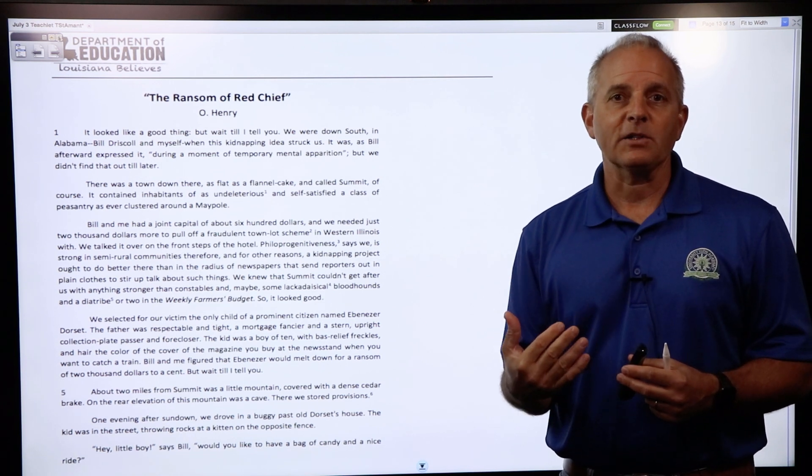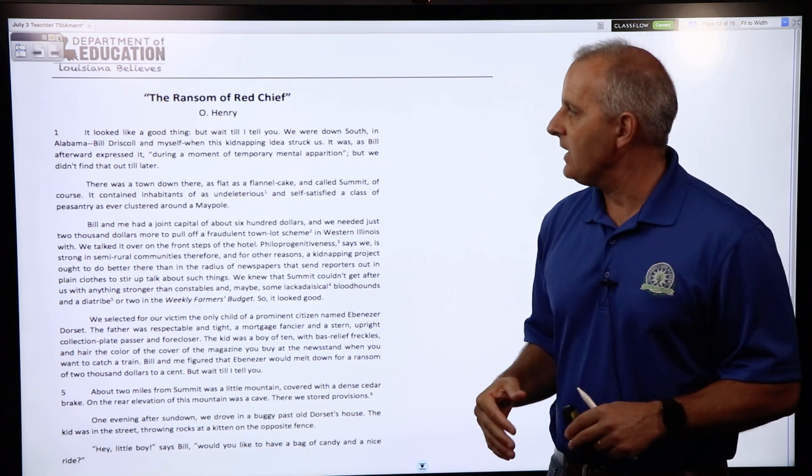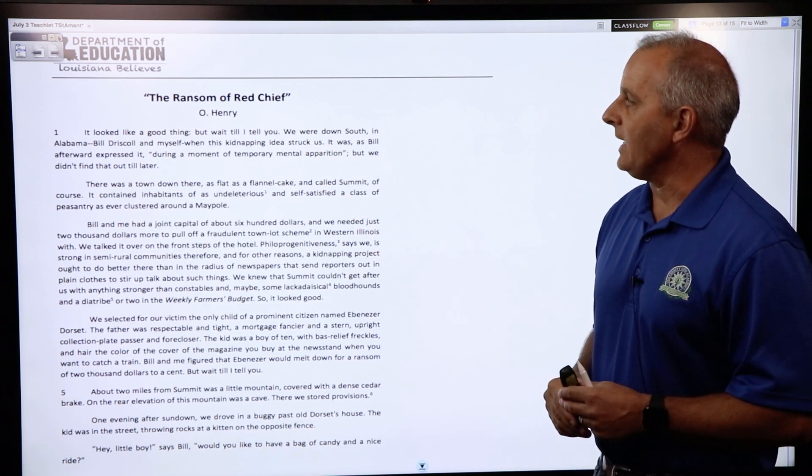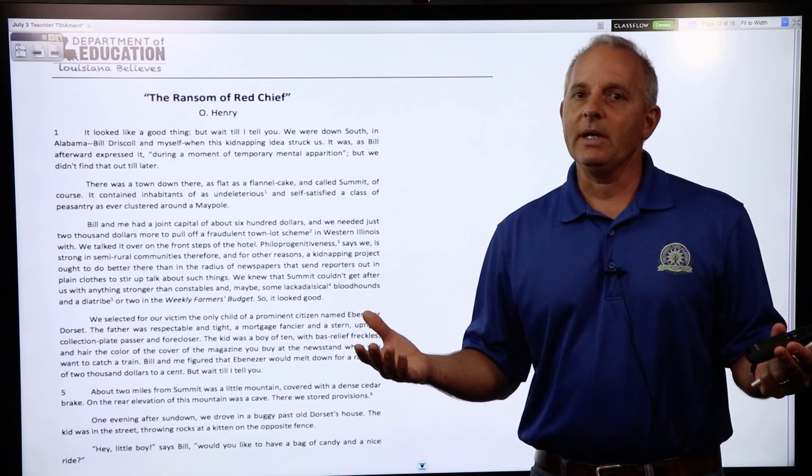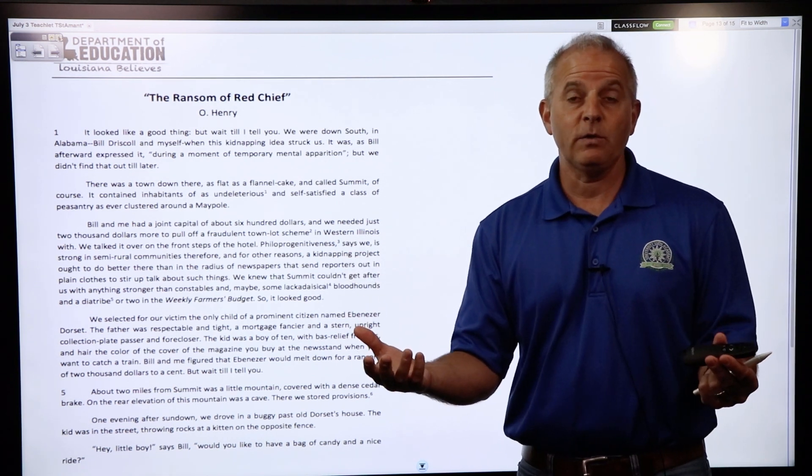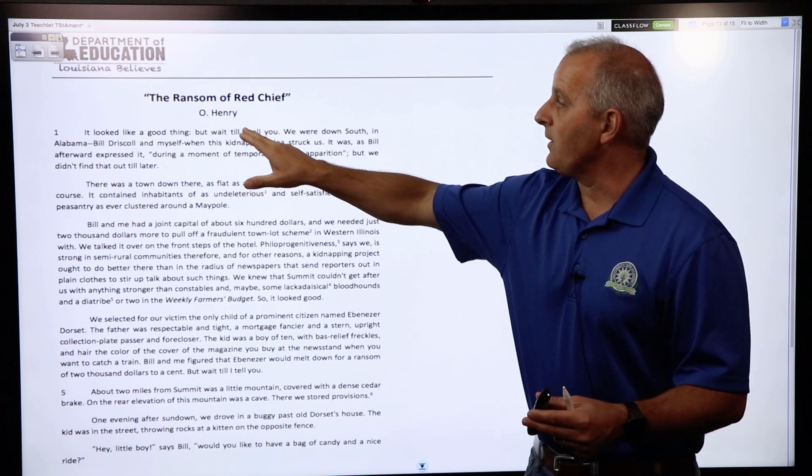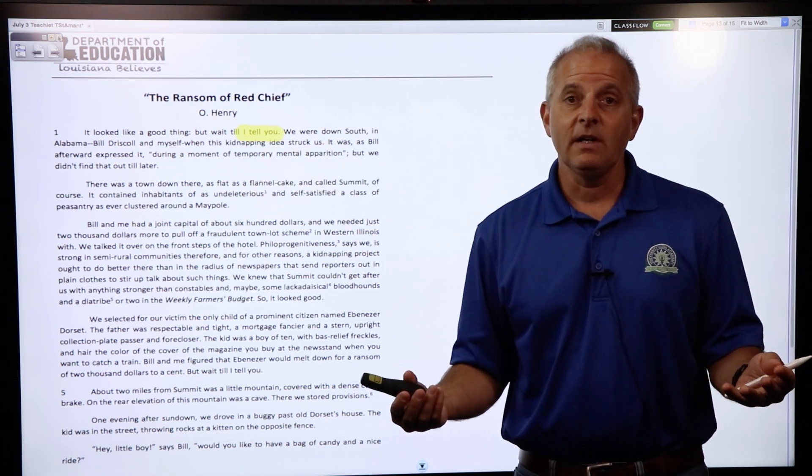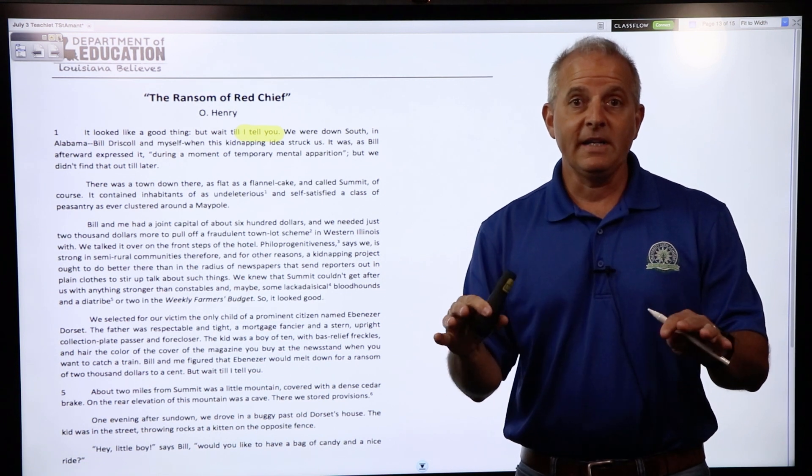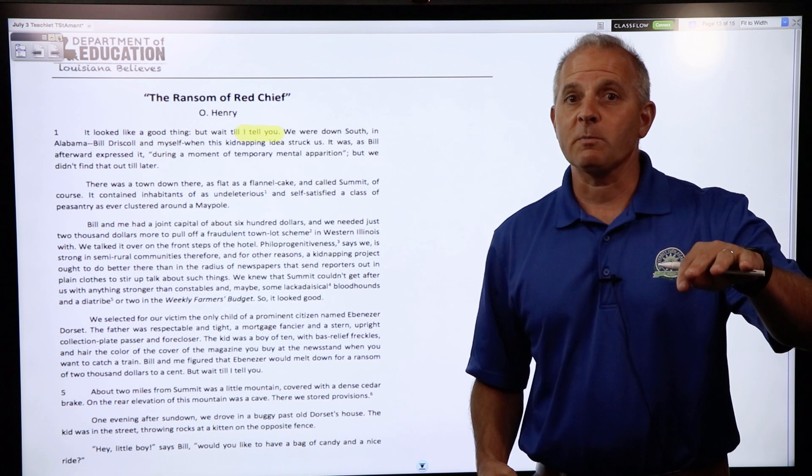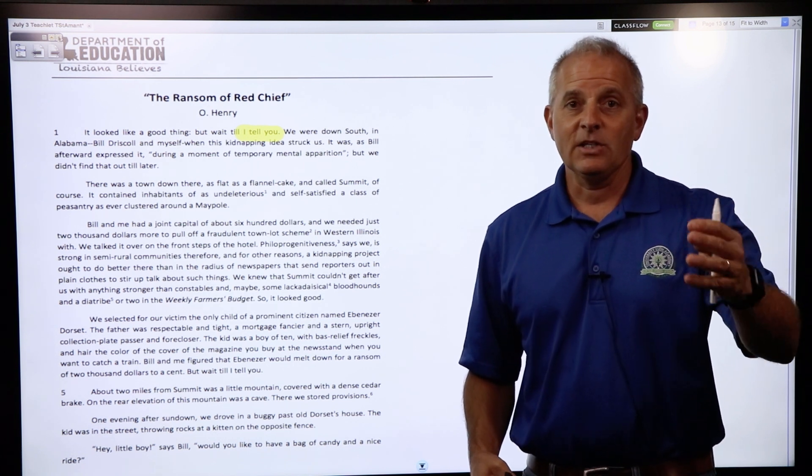As we look at the first part, it looked like a good thing, but I will tell you—now we can stop right there and highlight something that helps us figure out who the narrator is. The narrator I think is a first-person, very personal narrator: 'I will tell you.' We're looking at the events through someone's personal set of eyes, so this is probably the most personal type of narrator that we can have, a first-person narration.